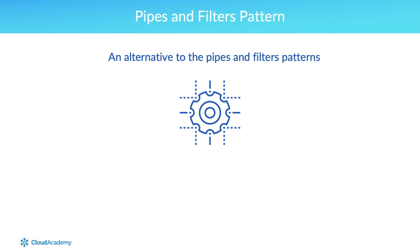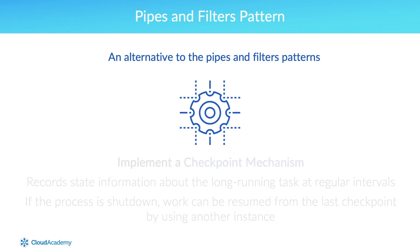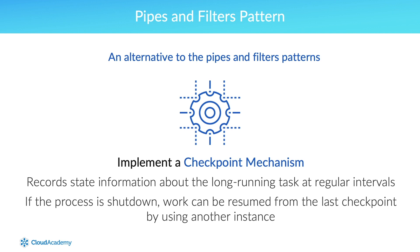As an alternative to the pipes and filters pattern, you could implement a checkpoint mechanism that records state information about a long running task at regular intervals. Saving this state information in durable storage allows it to be accessed by any instance of the process running the task. If the process is shut down, any work it was performing can be resumed from the last checkpoint by using another instance.